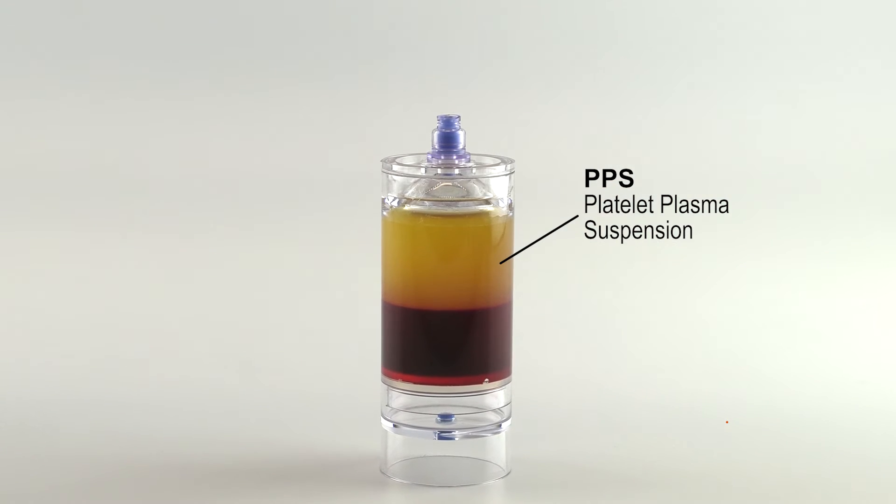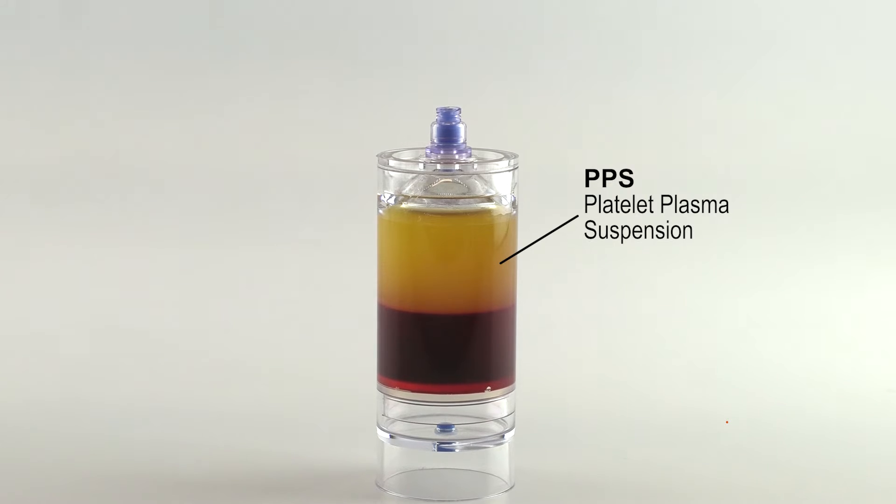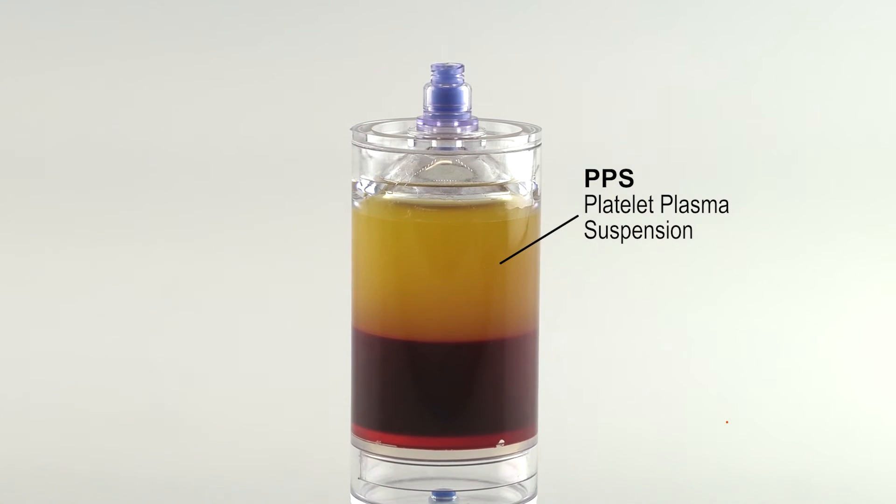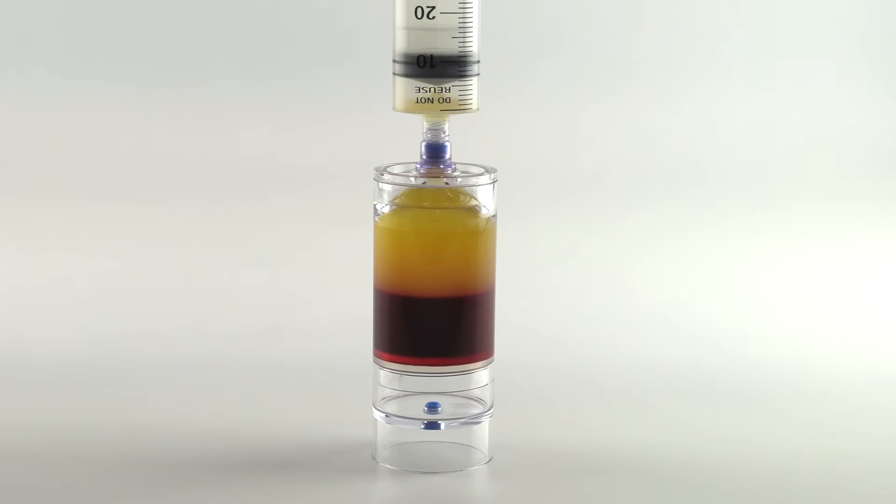After centrifugation, the platelet plasma suspension, or PPS, will be separated above the red blood cell layer. Attach a sterile syringe to the top port and aspirate the platelet plasma suspension.